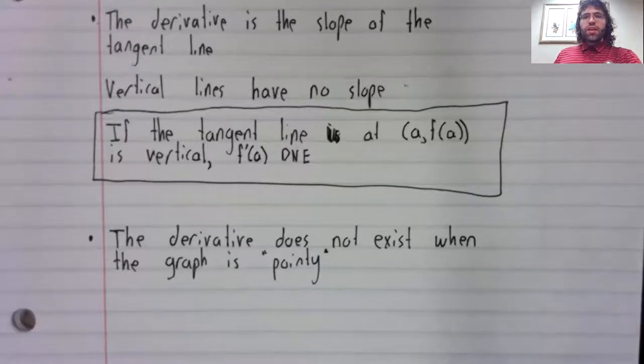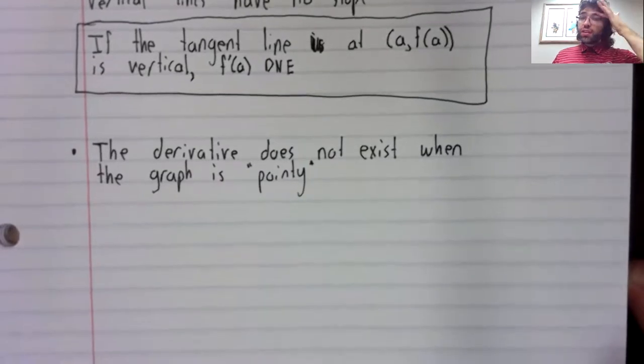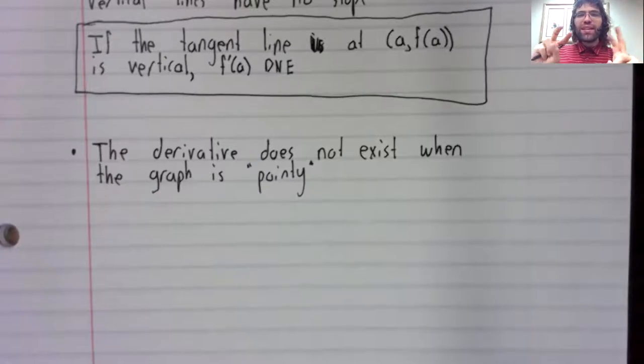The second case we'll look at where the derivative doesn't exist, I'll state a little informally. The derivative does not exist when the graph is pointy.